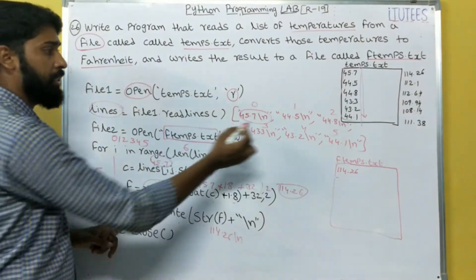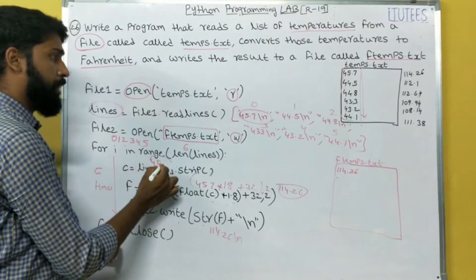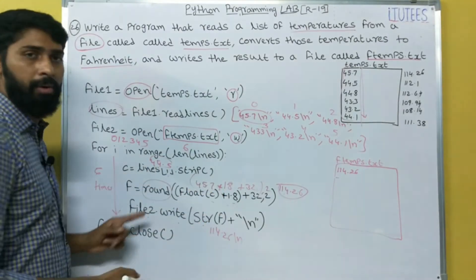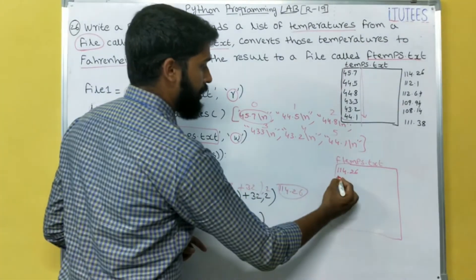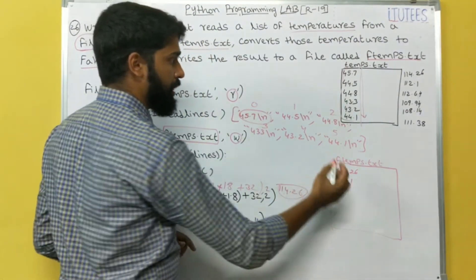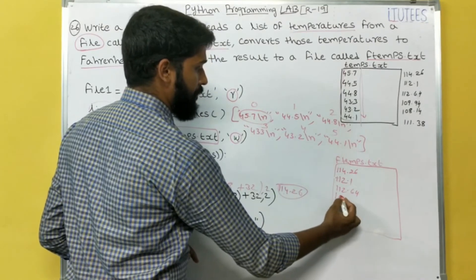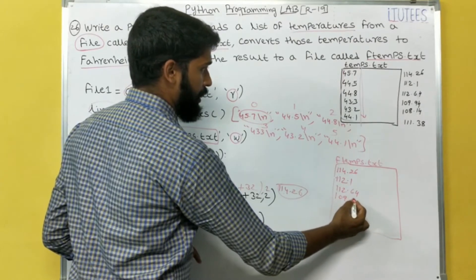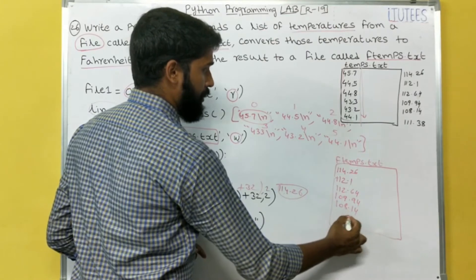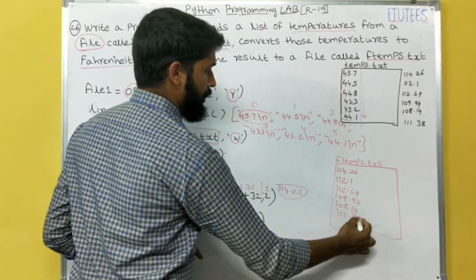In the next iterations, the same operations are performed. For 44.5, we get 112.1. For the next, 112.64. For the next, 109.94. For the next, 108.14. And for the last one, 111.38.